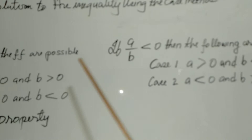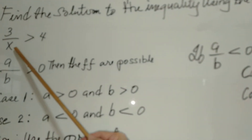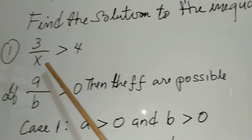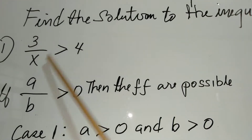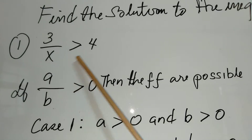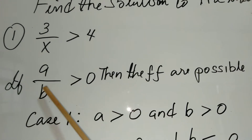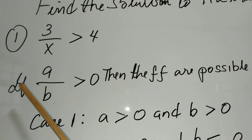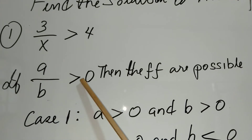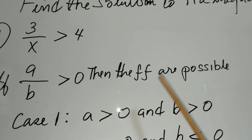We are given here 3 over x is greater than 4. So this fraction has a = 3 and b = x, and it is greater than 4. We're going to use the condition where a over b is greater than 0.